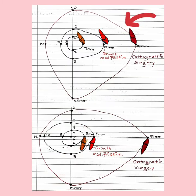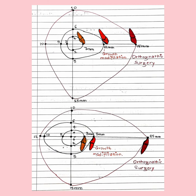The upper graph is for the maxilla and below it is for the mandible. In the maxilla, if there is an overjet of 7 mm, that is retracted by orthodontic tooth movement alone. If the overjet is 12 mm, it is retracted with the help of growth modification and tooth movement. If the overjet is 15 mm, that is done with the help of orthognathic surgery.